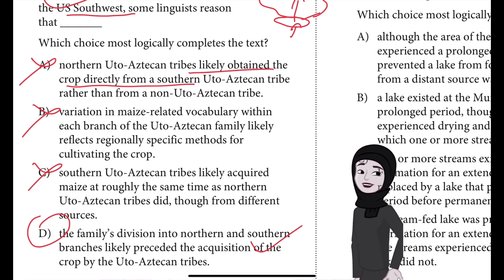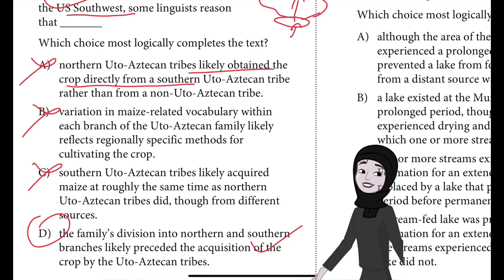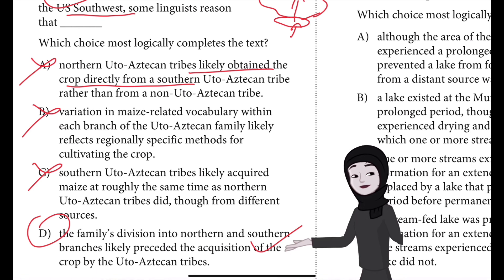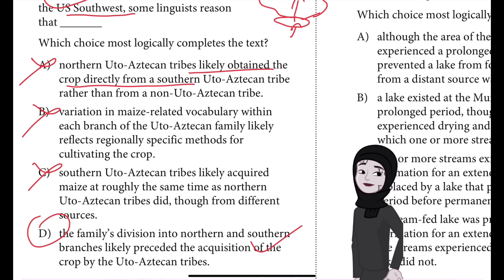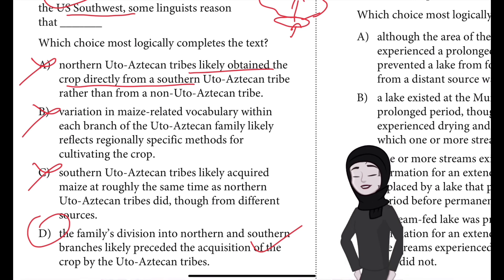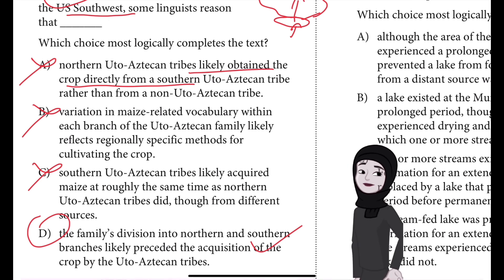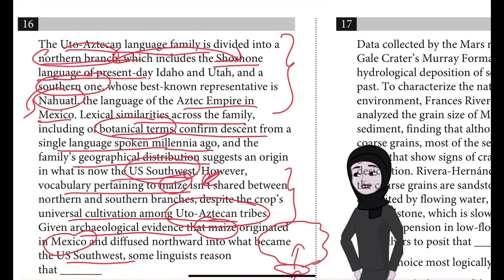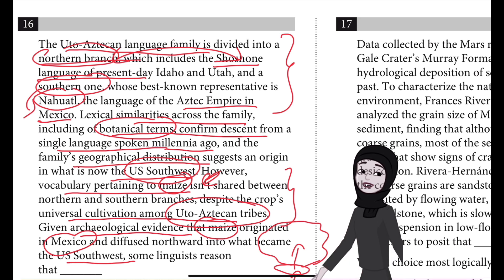The best answer is D. D most logically completes the discussion of Uto-Aztecan languages. The text explains that the northern and southern branches descended from a single language believed to have originated in what is now the U.S. Southwest, resulting in similarities across the family's languages. However, the branches don't share vocabulary for maize even though maize was cultivated by all Uto-Aztecan tribes. Maize originated in Mexico and spread northward into the area where the language family originated.